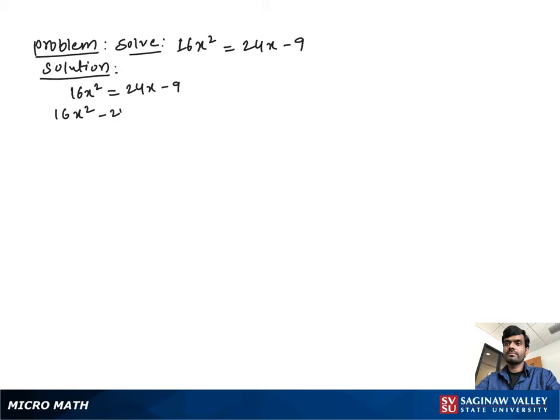We write 16x square minus 24x plus 9 equal to 24x minus 9 minus 24x plus 9. We subtract 24x both sides and add 9 both sides.